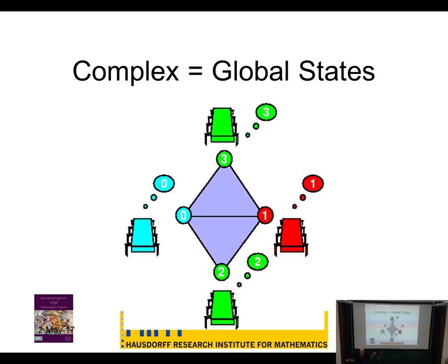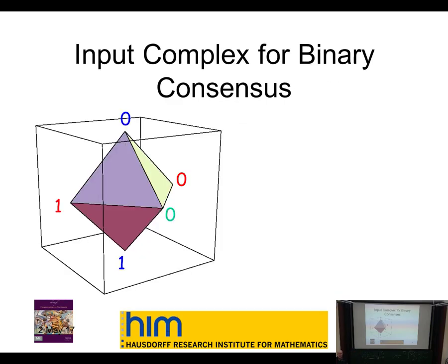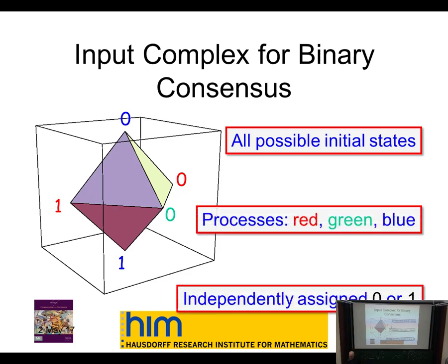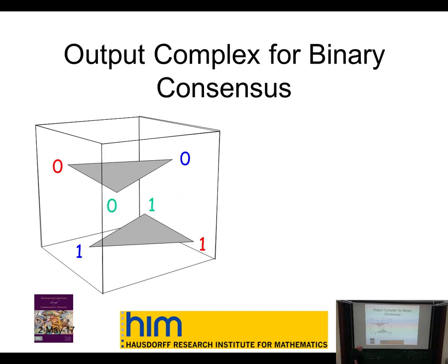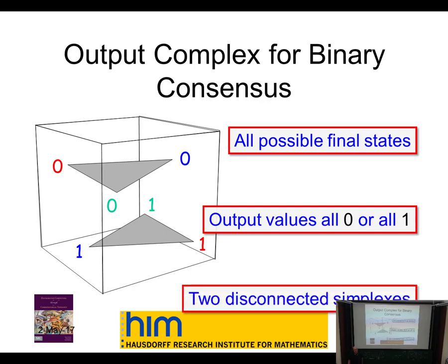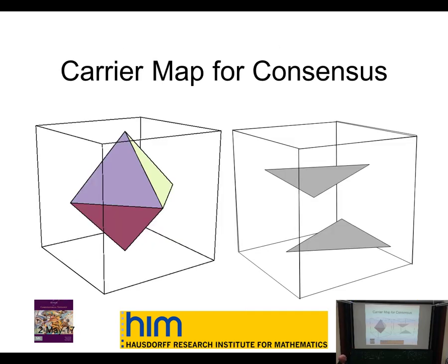The set of all possible global states is a simplicial complex. For example, suppose we want to do consensus where everybody starts with a zero or one. We have three processes and look at all possible assignments of zero and one independently. That defines a simplex — a sphere. If you have n+1 processes independently assigned values from zero and one, you get a combinatorial n-sphere of all possible initial states.